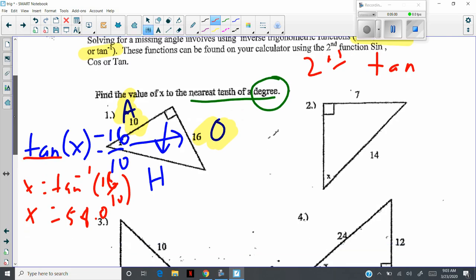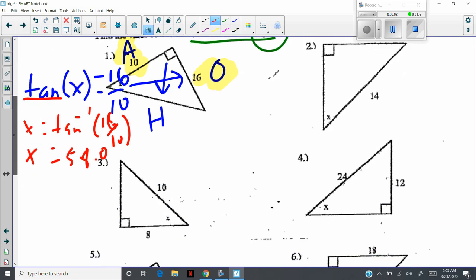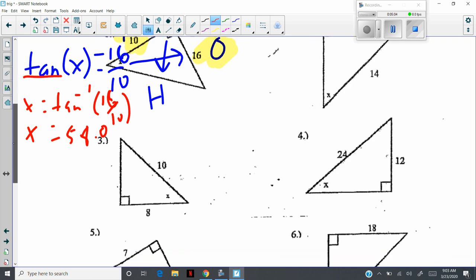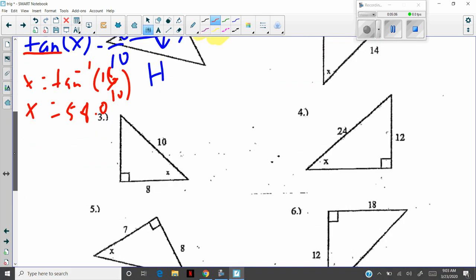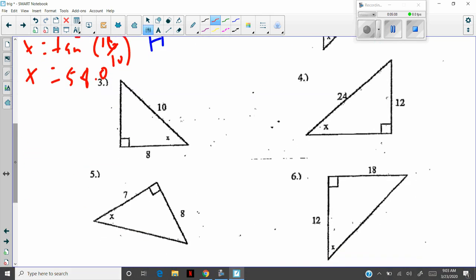I'm going to do one more of these here. I'm going to skip around a little bit. Let me head to number four just so I do something different. Let's see here. Got my H. Got my O. Got my A. Looks like I have O and H. Think of SOHCAHTOA. That means sine. So sine angle is X. 12 over 24.